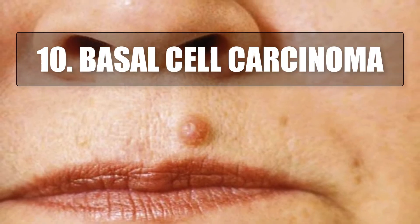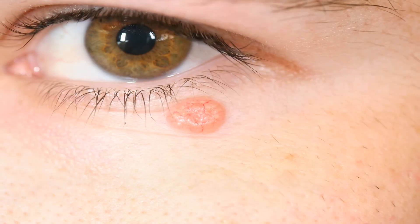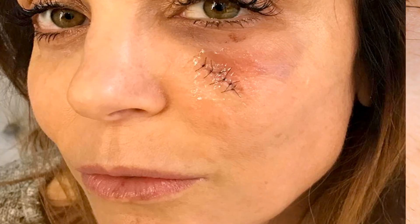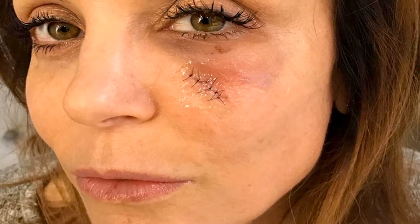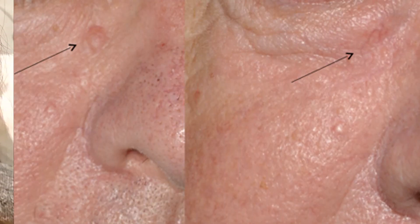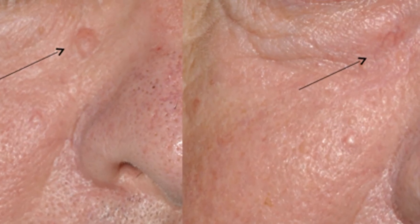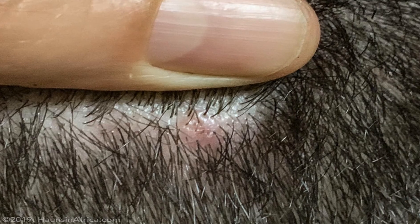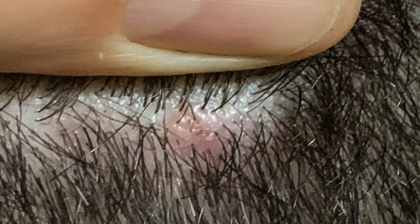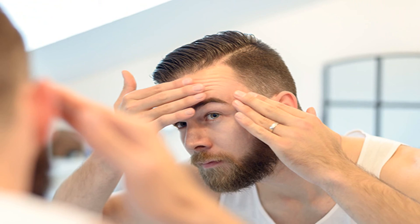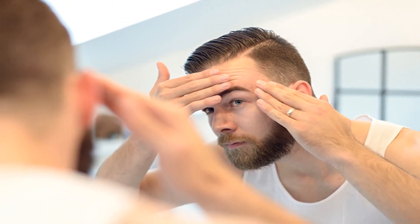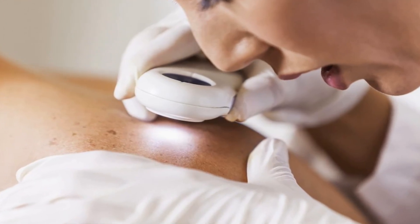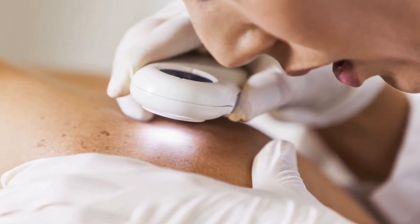Number 10: Basal Cell Carcinoma. Basal Cell Carcinoma, or BCC, is the most common form of skin cancer and the most frequently occurring form of all cancers. In the US alone, more than 4 million cases are diagnosed each year. BCCs arise from abnormal, uncontrolled growth of basal cells. Because BCCs grow slowly, most are curable and cause minimal damage when caught and treated early. Understanding BCC causes, risk factors and warning signs can help you detect them early when they are easiest to treat and cure.